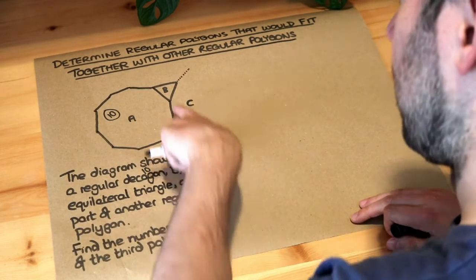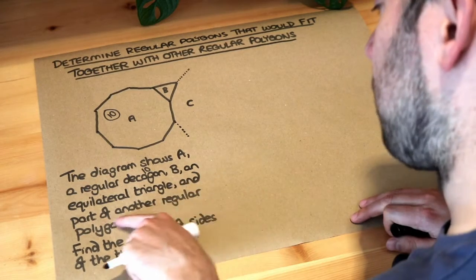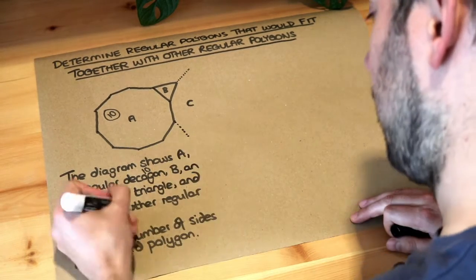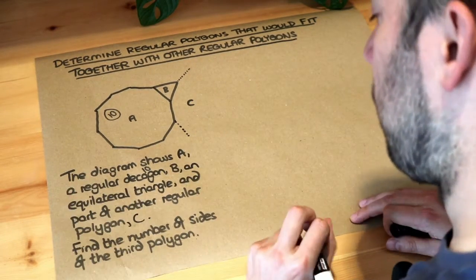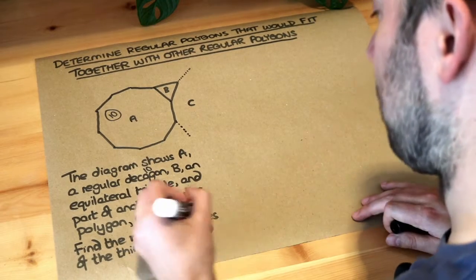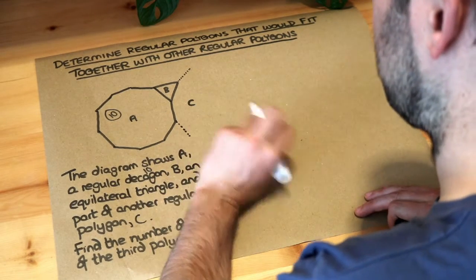An equilateral triangle, B, so that's an equilateral triangle, and part of another regular polygon, C. And we want to find the number of sides of this third polygon, so we want to find the number of sides of C.